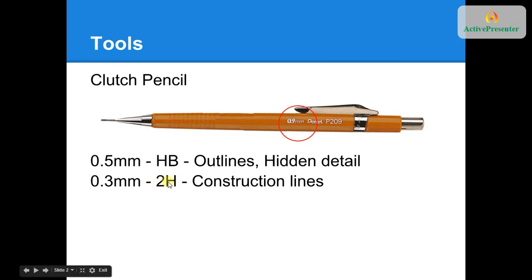Those lines will be drawn also with the clutch pencil, but using a 0.3mm, much smaller than the 0.5mm, and using a 2H lead. You can see here the picture we've got is a 0.9. You want to make sure you have a 0.5 and a 0.3.